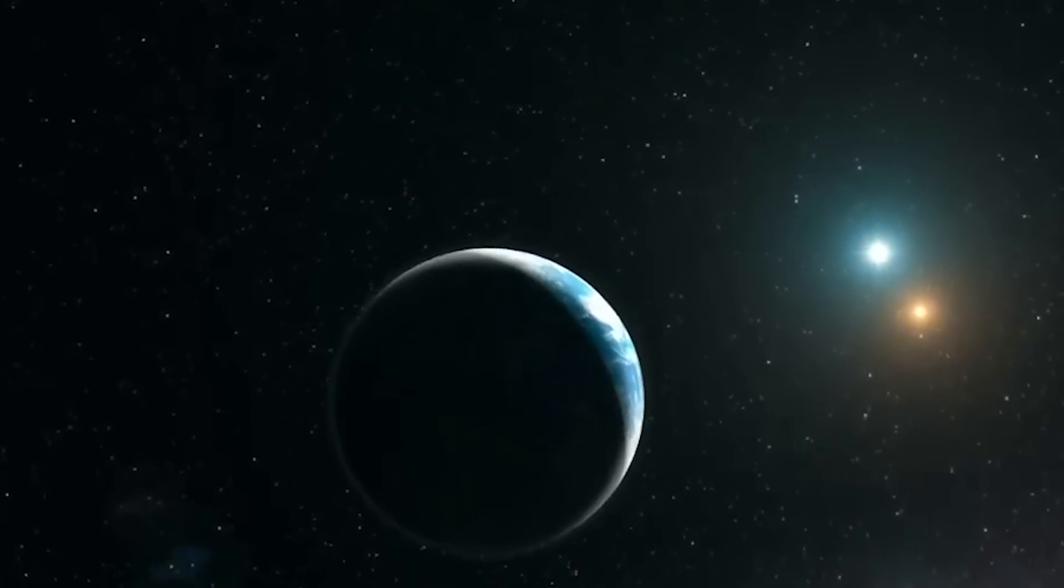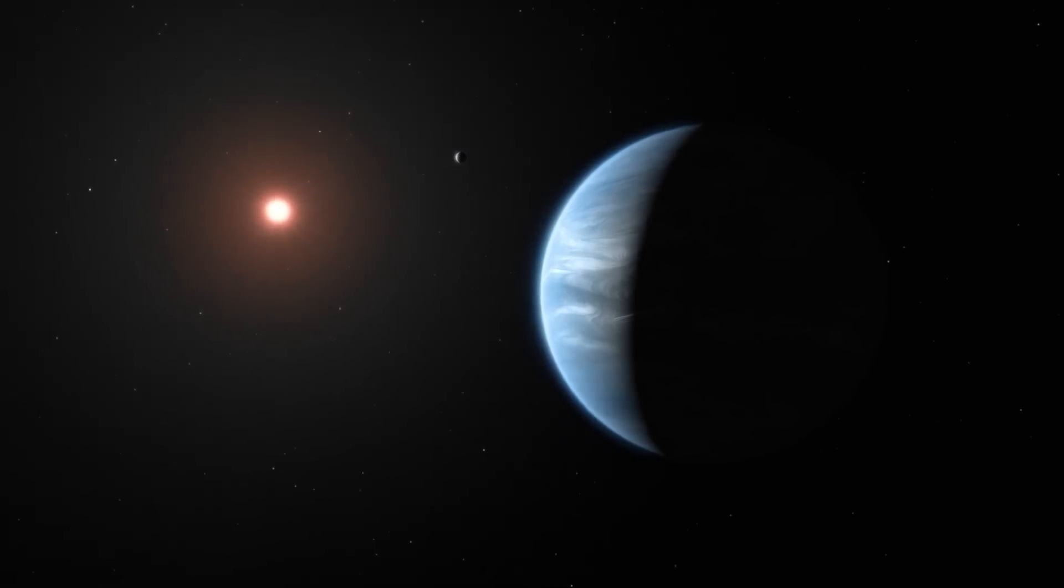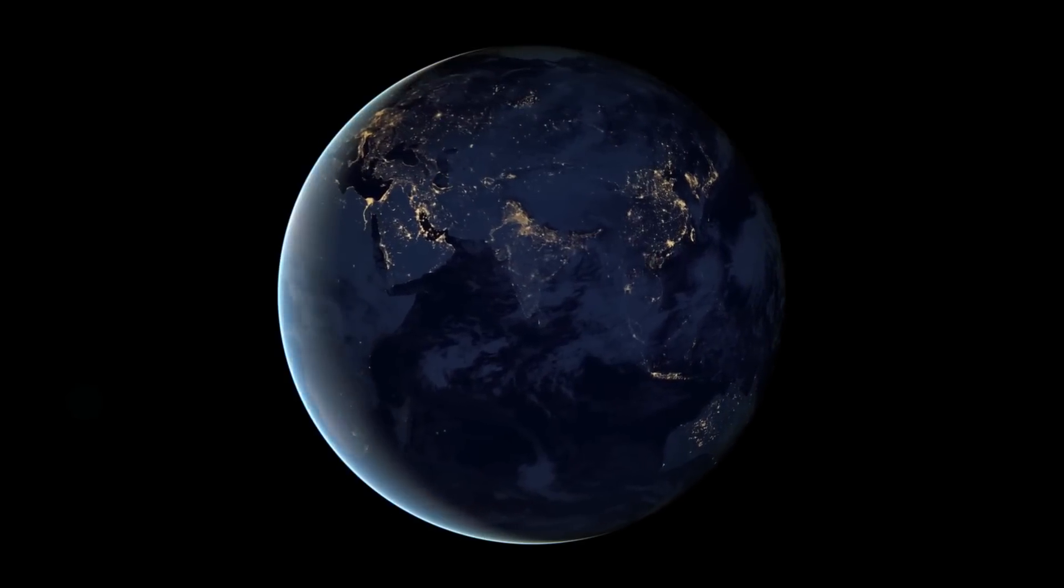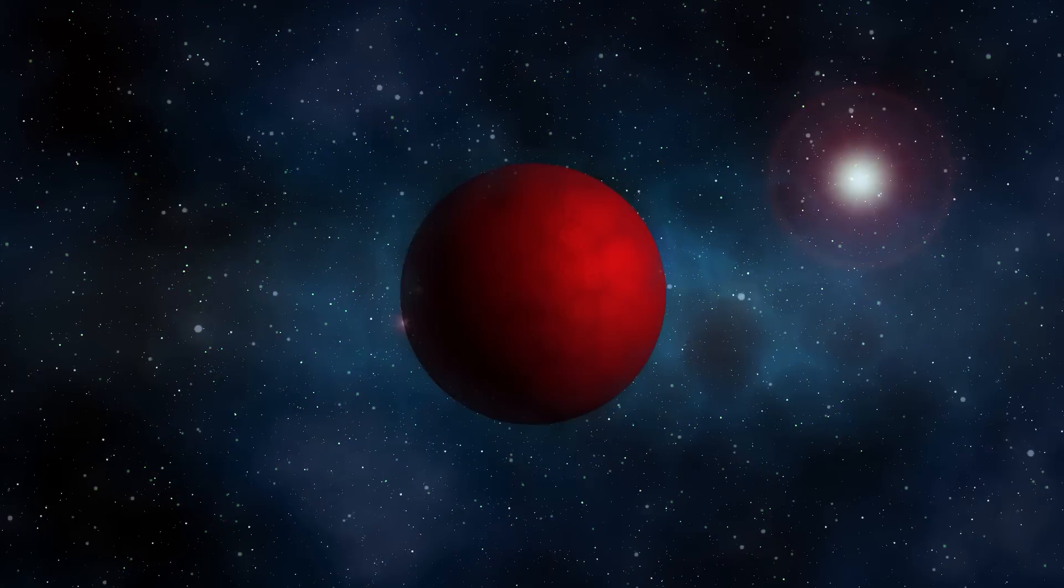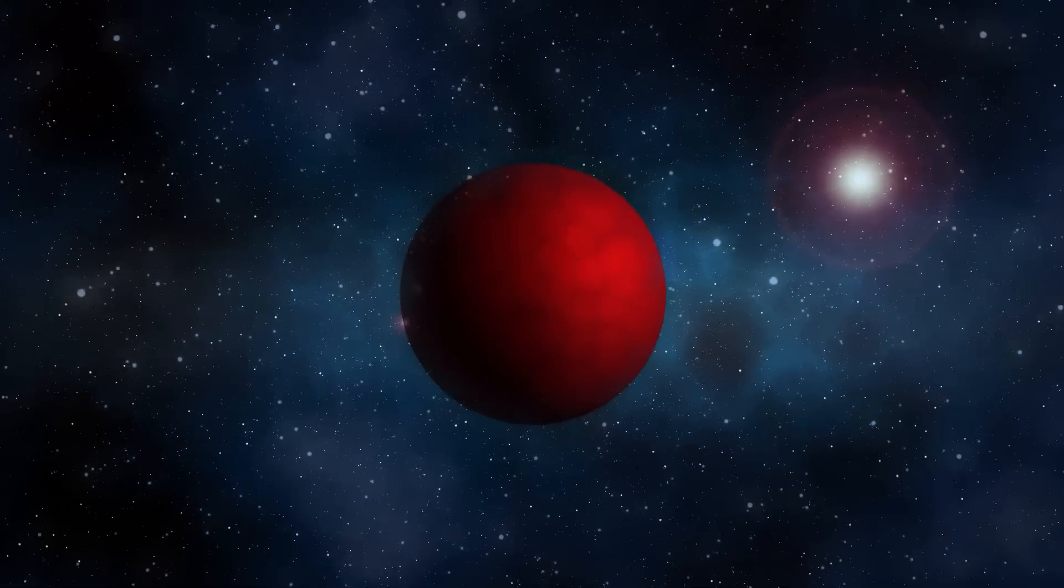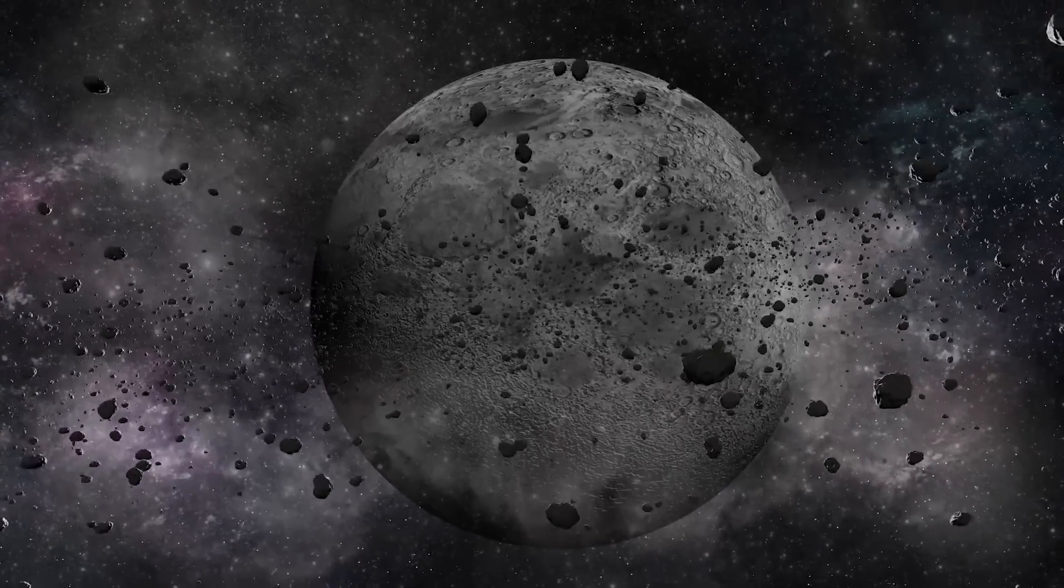One of the seven planets in the TRAPPIST-1 system, TRAPPIST-1e, orbits an M dwarf star that is 39 light-years away from Earth and is rather cold. The TRAPPIST-1 system has become the key target for the hunt for life elsewhere in the universe due to the fact that all of these extrasolar planets, also known as exoplanets, are believed to be rocky or terrestrial worlds that are comparable in size to Earth.